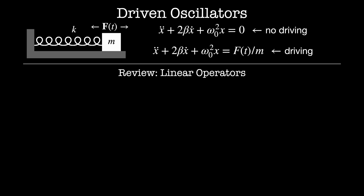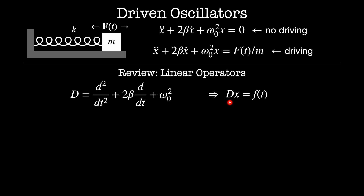When I talk about operators, I'm talking about differential operators. This is the differential operator for our system: D equals d squared by dt squared plus 2 beta d by dt plus omega naught squared. Basically I've pulled out all of the derivatives in my equation of motion and I'm going to act this as a function on my variable x. Then my equation of motion becomes D acting on x equals some function of time.